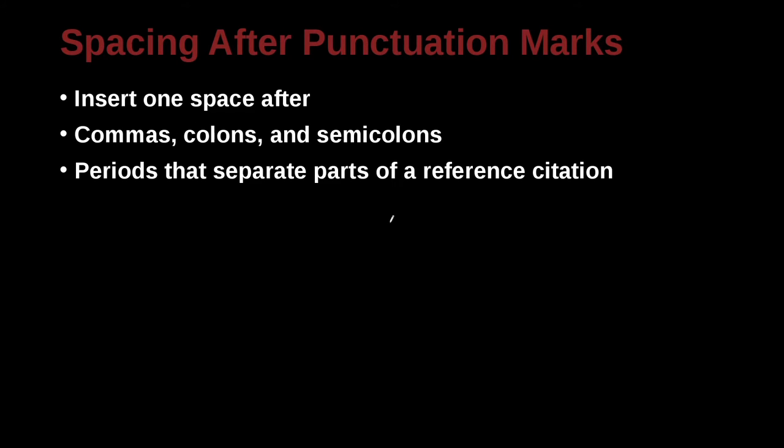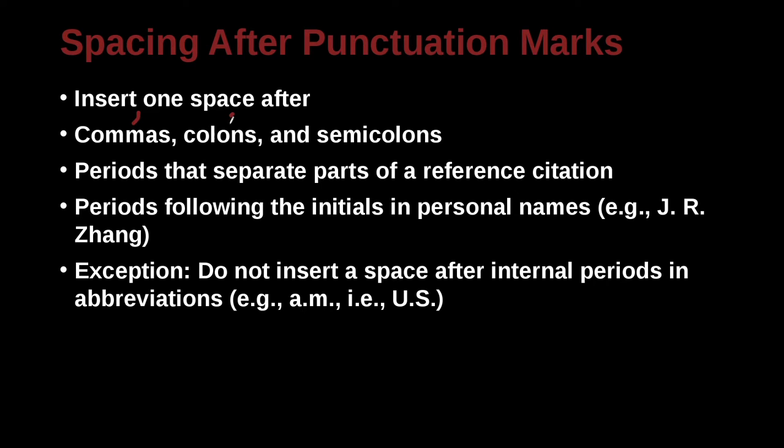Commas, colons, and semicolons have a space after them. So a comma has a space after, a colon has a space after, a semicolon has a space after. Just to be clear here, a comma, a colon—a colon is these two dots here—and a semicolon is the dot and the comma underneath.